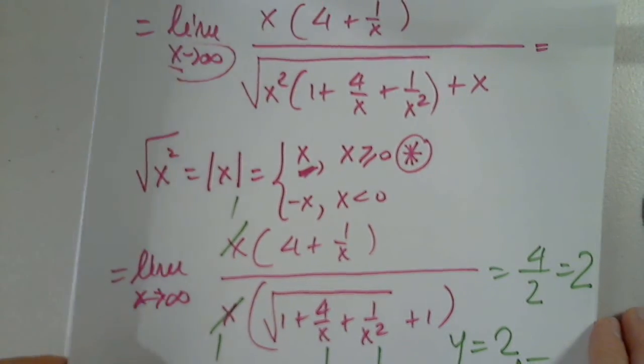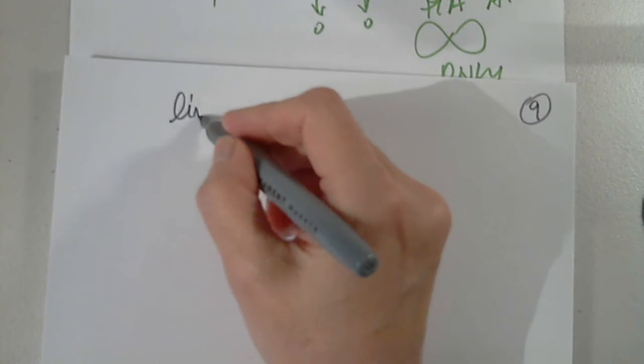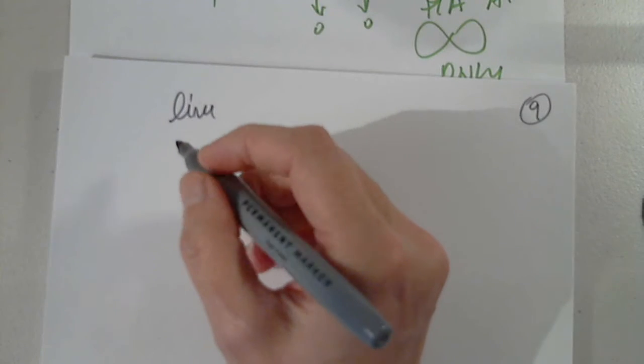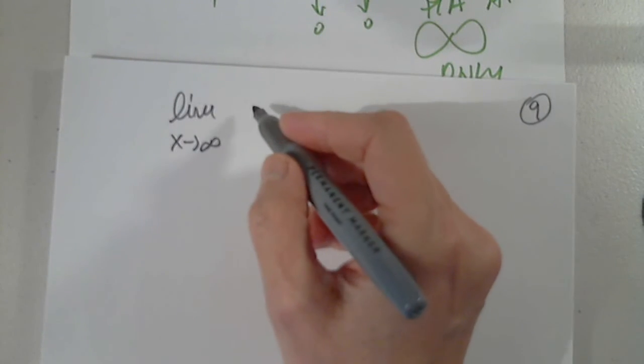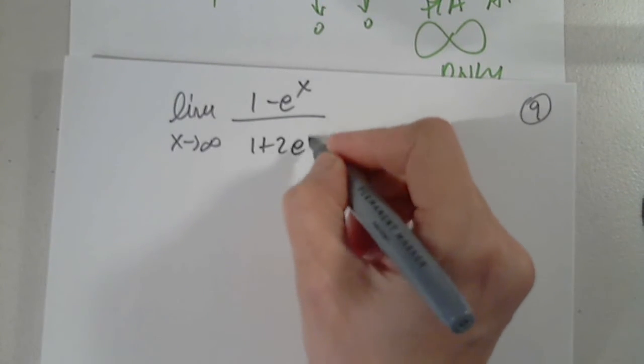Okay, so now part B. We have the limit as x approaches infinity from 1 minus e to the x over 1 plus 2 e to the x.